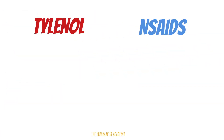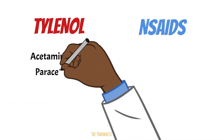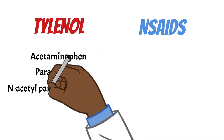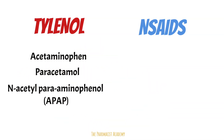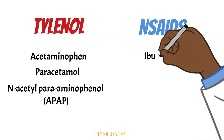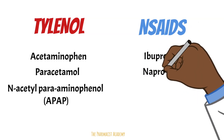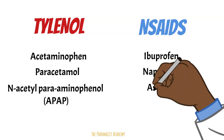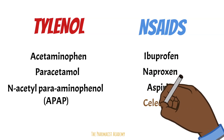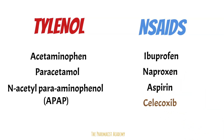Tylenol is also known as acetaminophen, paracetamol, or N-acetoparaaminophenol, also known as APAP. Some of the common NSAIDs we have are ibuprofen, naproxen, aspirin, and celecoxib, which is in a different color because it's a selective inhibitor — the ones listed above it are all non-selective inhibitors. We will learn more about this as we go.